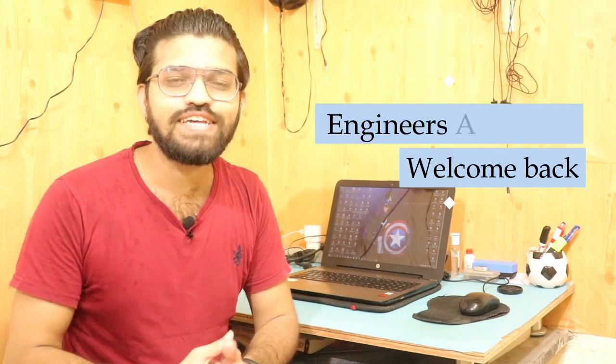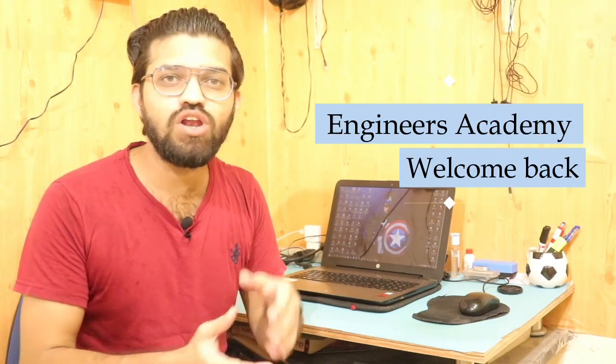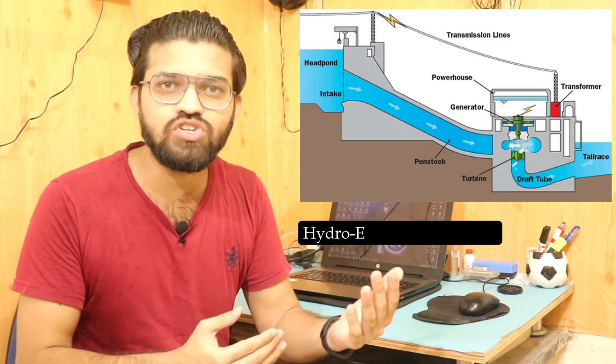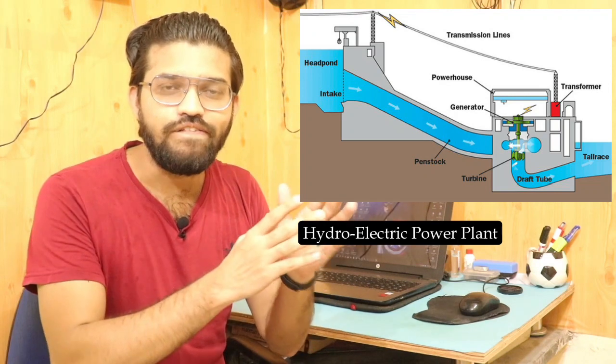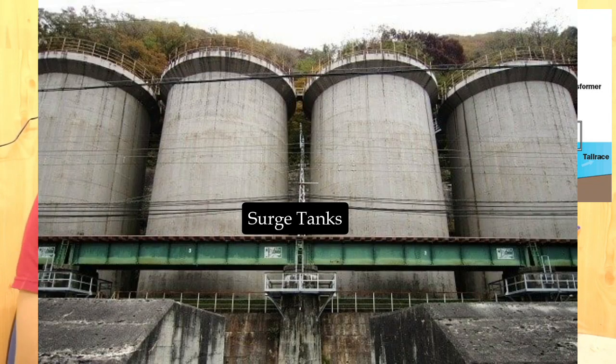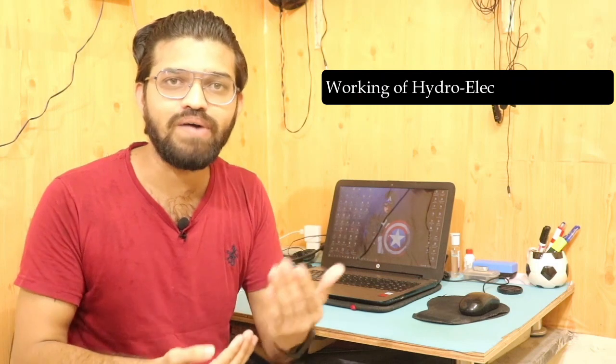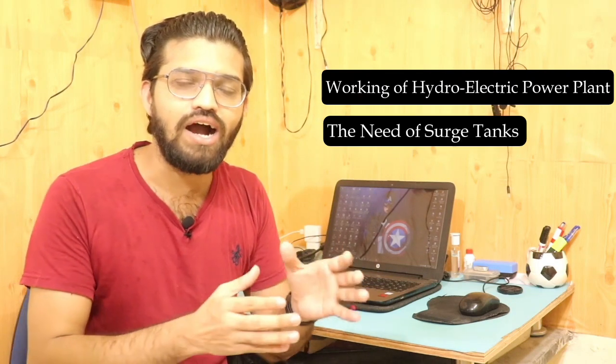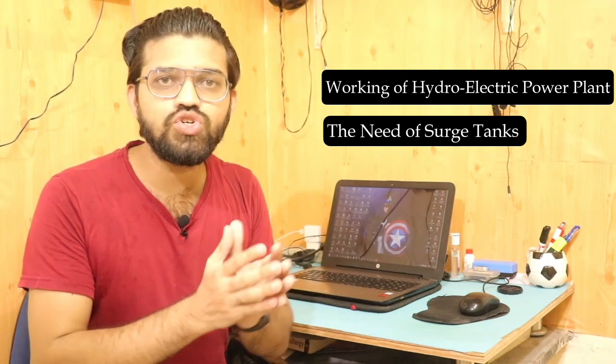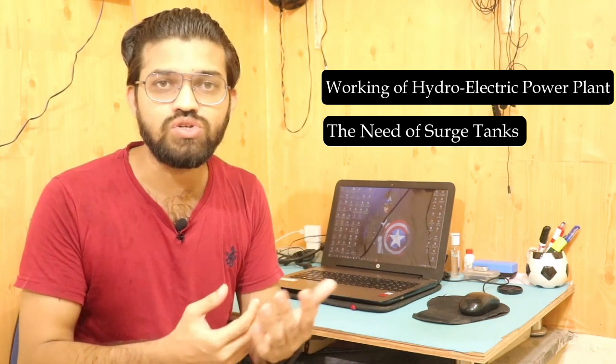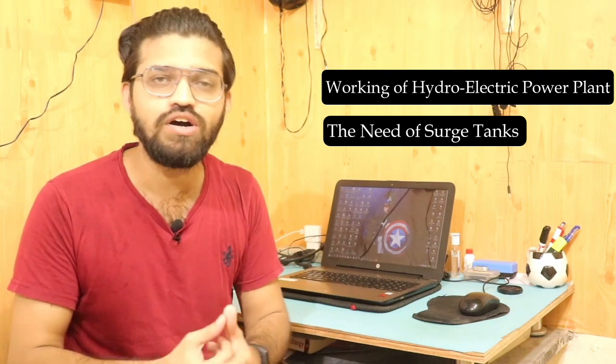Hi everyone, welcome back to another video of Genes Academy. In this particular video, we are going to learn about the introduction of hydraulic turbines — how hydraulic turbines work during the production of electricity, and in this production process which occurs in hydroelectric power stations, there are tanks called surge tanks. We are going to learn the actual working of hydroelectric power stations alongside why these surge tanks are used and what is the necessity of the surge tank.